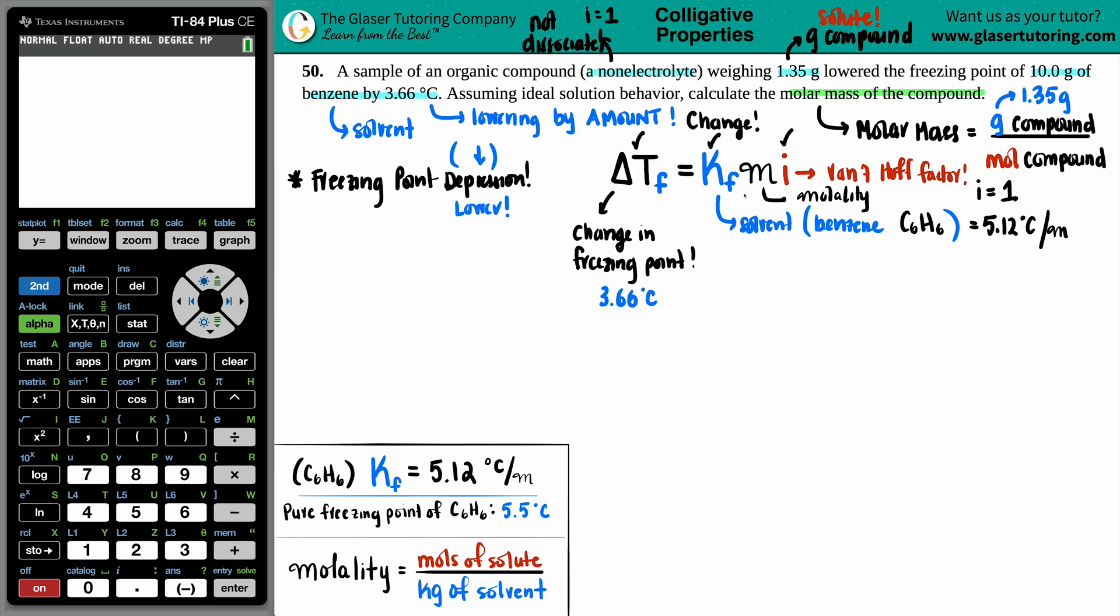So we have this. Looks like for the first part we're going to solve for the molality. So 3.66 equals the KF value, which is 5.12, times x times the van't Hoff factor, which is just one. So in essence, we don't even have to include it, but we can just divide by 5.12, cancel this out. And now we have x equals 3.66 divided by 5.12, and I get 0.7148. And that's now the molality.